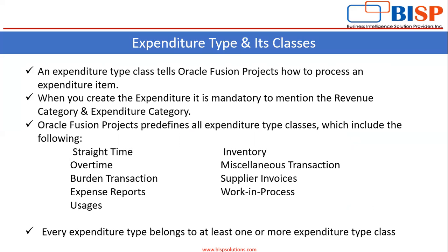Oracle Fusion Projects pre-defines all expenditure type classes, which include: straight time, overtime, burden transactions, expense reports, usages, inventory, miscellaneous transactions, supplier invoices, and work in process. When you create the expenditure type, it is mandatory to assign at least one expenditure type class. You can assign more than one, but assigning one is the mandatory task. Every expenditure type belongs to at least one or more expenditure type class.